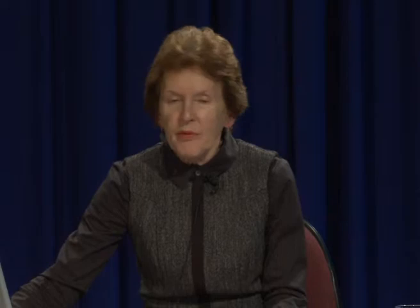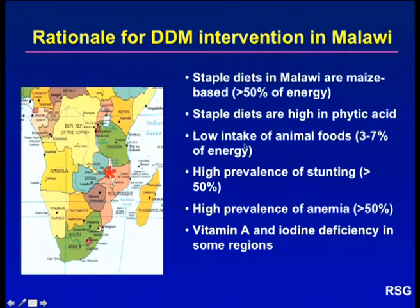This slide presents our rationale for choosing dietary diversification modification as our intervention in rural Malawi. The staple diets in Malawi are maize-based, and in the rural areas as much as 50% of the energy can come from this single staple. As a result, the diets are very high in phytic acid. There's a low intake of animal-sourced foods — only between 3 and 7% of energy from animal foods. There is a high prevalence of stunting and anaemia, and in certain regions, vitamin A and iodine deficiency also exist.